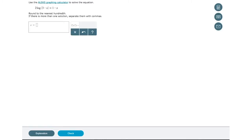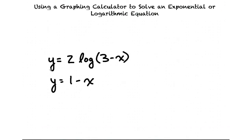We want to find what value of x we can plug into this equation to make the two sides equal to each other. One way to do this is to think about this as two separate equations: y equals 2 times the log of 3 minus x, and y equals 1 minus x.